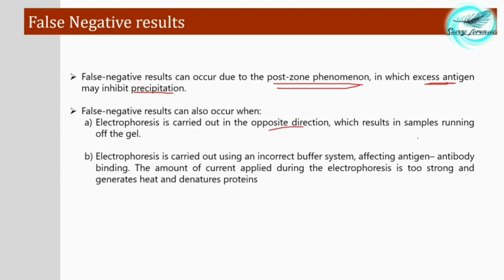False negatives can also occur when electrophoresis is carried out in the opposite direction, causing the sample to run off the gel. Another cause is using an incorrect buffer system, which affects antigen-antibody binding so no proper precipitation occurs. Additionally, if the amount of current applied is too strong, it generates heat that denatures the proteins, also leading to false negative results.